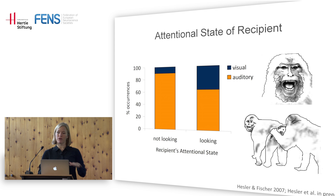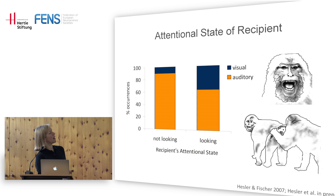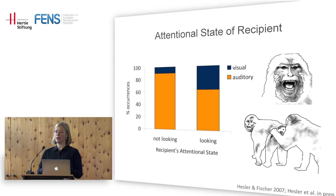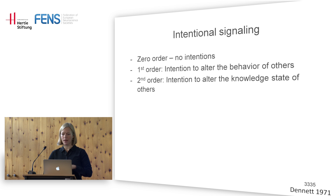In terms of usage of calls, it's by no means reflexive. For instance, in a study where animals could take the recipient's attentional state into account: if the other animal is looking at them, they tend to use more visual signals than auditory signals; when the other animal is not looking, they use mostly auditory signals. So there is some flexibility in signal usage — they are not automatons. We'll make a break now and come back at 10.